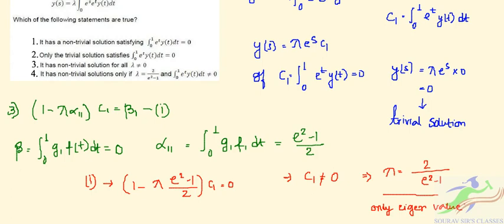So a non-trivial solution exists only for the specific eigenvalue λ = 2/(e² − 1), not for all λ ≠ 0. Therefore option 3 is false. Option 4 states that a solution exists only if λ is not equal to this eigenvalue — that option addresses the trivial-solution regime. Based on the analysis, option 2 is the correct statement among the choices.